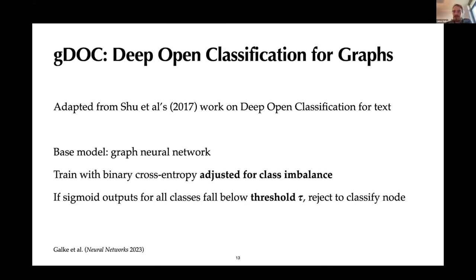And so this is a challenging problem to determine in an unsupervised way. We again started from the lifelong learning literature and modified the approach to deep open classification, which was originally developed for text classification. But we switch out a few things. We use, of course, a graph neural network to work on our data. And binary cross entropy training was also used before, but we had to adjust it for class imbalance, as you will see in the results. But the general idea of this technique is if all sigmoid outputs fall below a certain threshold, we just reject to classify the node and label it as out of distribution.